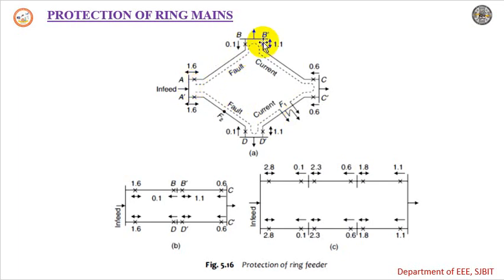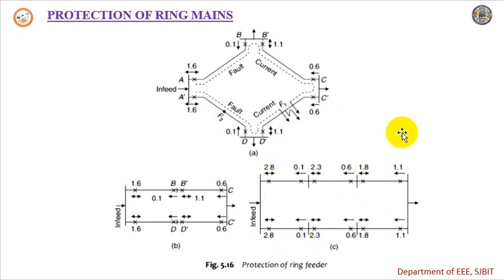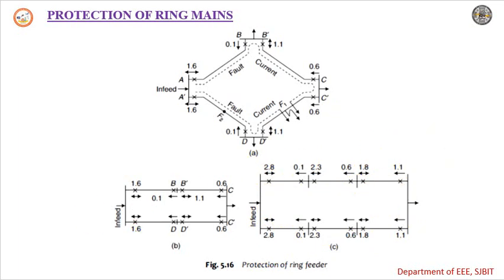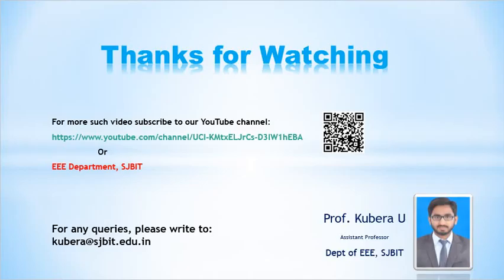The supply will be continuous with the help of the other feeders. The same thing is represented in simple form and also shown with an even greater number of feeders — here we have four feeders, and in another diagram we have six feeders. Each directional and non-directional relay has an associated operating time. This concludes the protection of parallel feeders and ring mains. Thanks for watching.